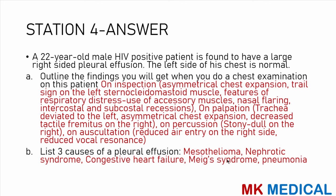Whenever I get such questions, I always imagine as if I am examining the patient and follow the normal schematic: inspection, palpation, percussion, and auscultation. On inspection, I would expect asymmetrical chest expansion, a tracheal deviation sign — the sternocleidomastoid border standing out on the left side because the trachea deviates left. There may be features of respiratory distress: use of accessory muscles, nasal flaring, intercostal and subcostal recessions. On palpation, the trachea may be deviated to the left, asymmetrical chest expansion, and decreased tactile fremitus on the right side. On percussion, a stony dull note on the right. On auscultation, reduced air entry and reduced vocal resonance on the right.